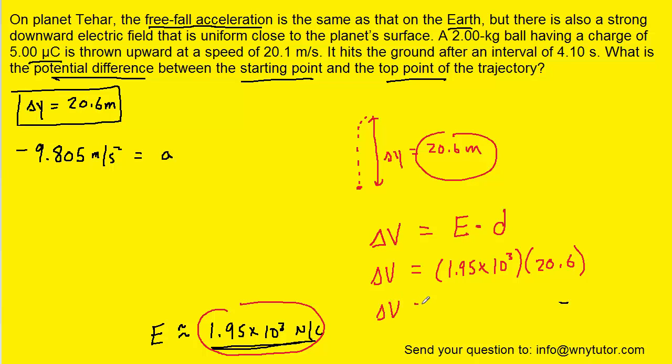And when we calculate that, we get approximately 4.02 times 10 to the fourth volts would be the unit for the potential difference.